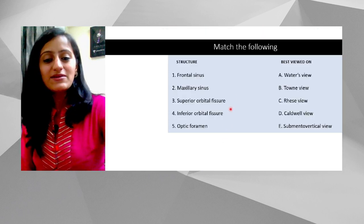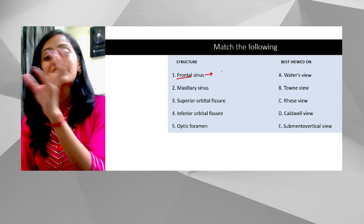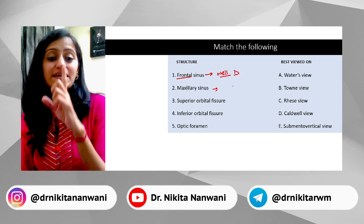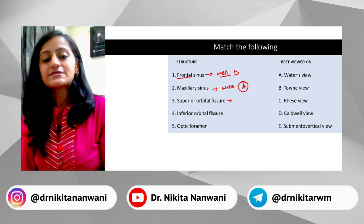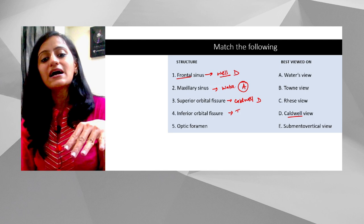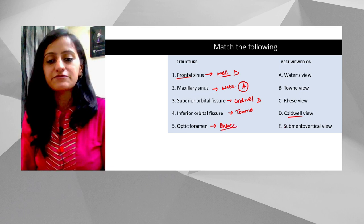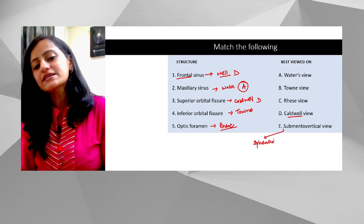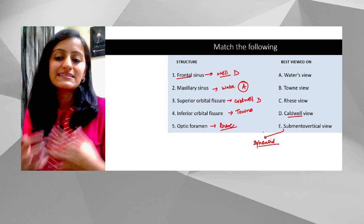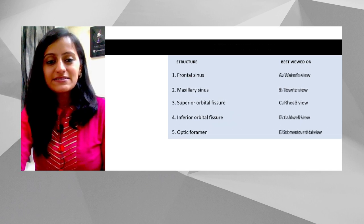Now let's apply this to practice questions. Frontal sinus — the well is in front of the house, so that's Caldwell's view. Maxillary sinus — the maxi girl drinking water, so Waters view. Superior orbital fissure — the well is superior, so Caldwell's view. Inferior orbital fissure — the town is inferior, so Townies view. Optic foramen — watching through the foramen, so Reese's view. The submentovertical view is for the sphenoid sinus, located at the skull base, and the lateral view can also be used for the sphenoid sinus.